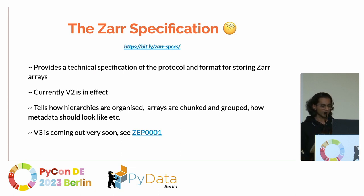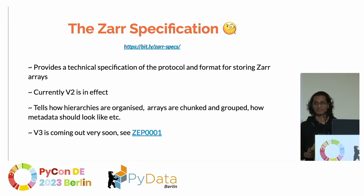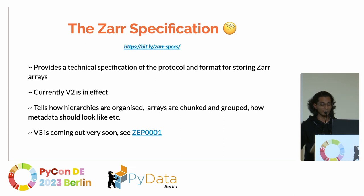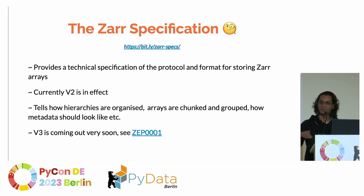A little bit about the specification. This is a technical specification that provides a protocol — similar to W3C web standards, which define how the internet works and how two endpoints communicate. The ZAR specification is something similar. Currently, version 2 is in effect, and version 3 has just been released — it'll be out in about a month. It has really strong support for extension points, which you can add without losing existing ZAR capabilities.